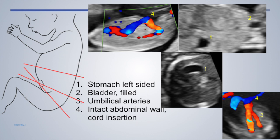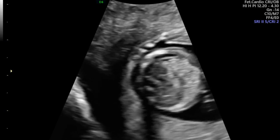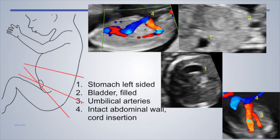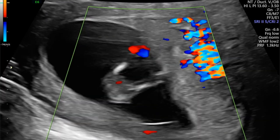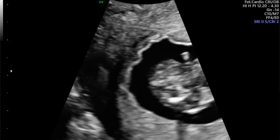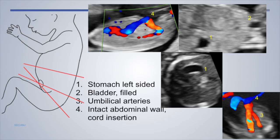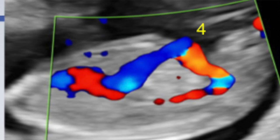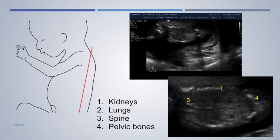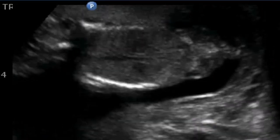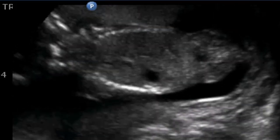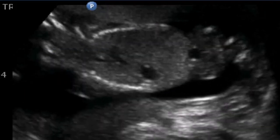In the abdomen there are three planes. In the transverse section the stomach is seen on the left side. In an oblique sagittal section you see the stomach and the bladder — the bladder is visualized most of the time beyond 12 weeks. The two umbilical arteries are seen, and an intact abdominal wall is assessed in the transverse or sagittal section. The umbilical arteries, umbilical vein, and ductus venosus are identified. Coming slightly posteriorly in a coronal section, the kidneys can be seen — easier on TVS — along with the lungs, spine with drip shadows, and pelvic bones.